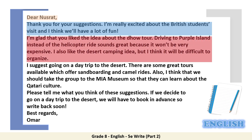Have a look at the second paragraph. What's the purpose of this paragraph? Responding to suggestions. He starts with the idea of the Dow tour, then he moves to the idea of driving to Purple Island. He likes that idea and provides the reason — because it won't be very expensive. Finally, he talks about the desert camping idea and thinks it's difficult to organize.